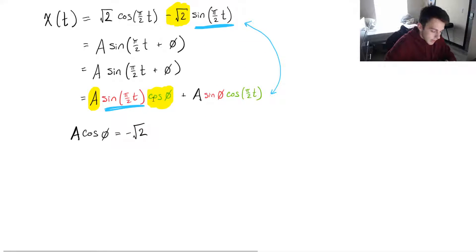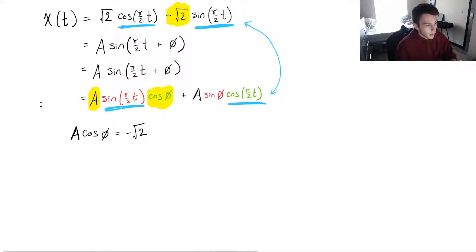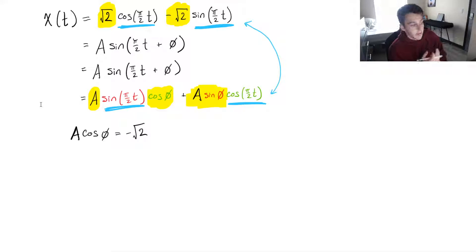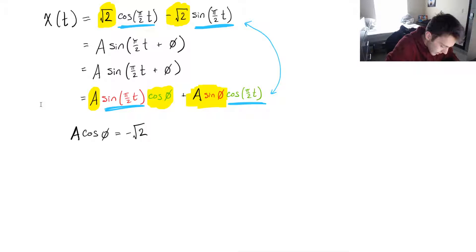Similarly, looking at the second term, we've got cosine of pi over 2t, and on the first line we've got another common term. Taking the coefficients and equating them: root 2 is equal to A sine phi — that's our coefficient, since sine of phi and A are both just numbers. So our second equation is: A times sine of phi is equal to square root of 2.